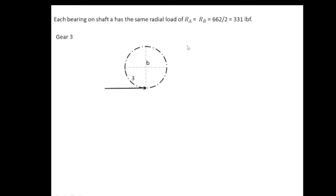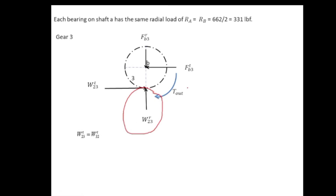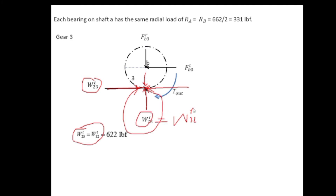Now let's find the forces on gear three, mounted on shaft B. The tangential force on gear three is w23t and the radial component is w23r, with corresponding shaft reactions fb3t and fb3r, plus an output torque T_out. By Newton's third law, the forces on gear two and gear three are equal in magnitude but opposite in direction: w23t = w32t and w23r = w32r.